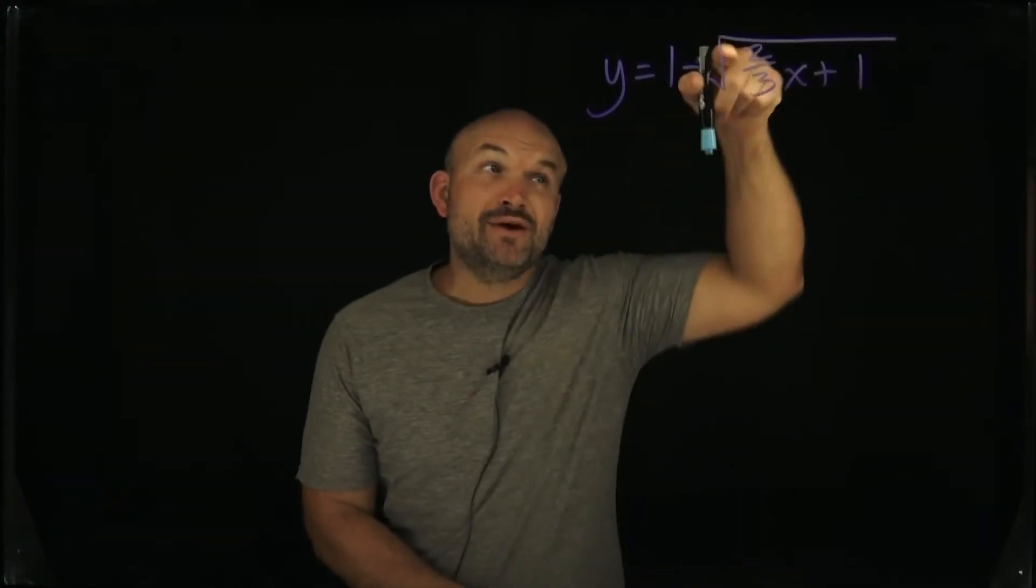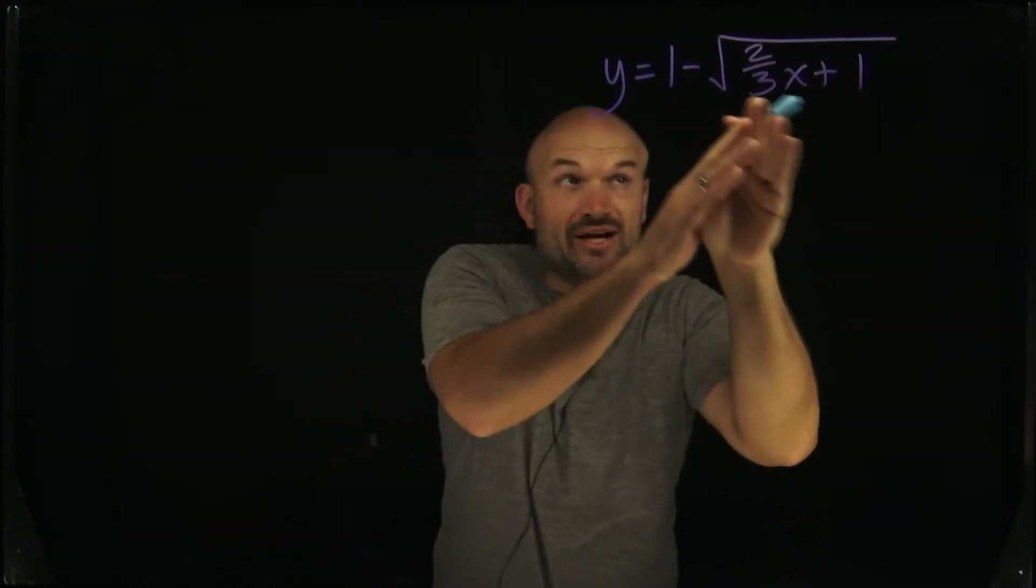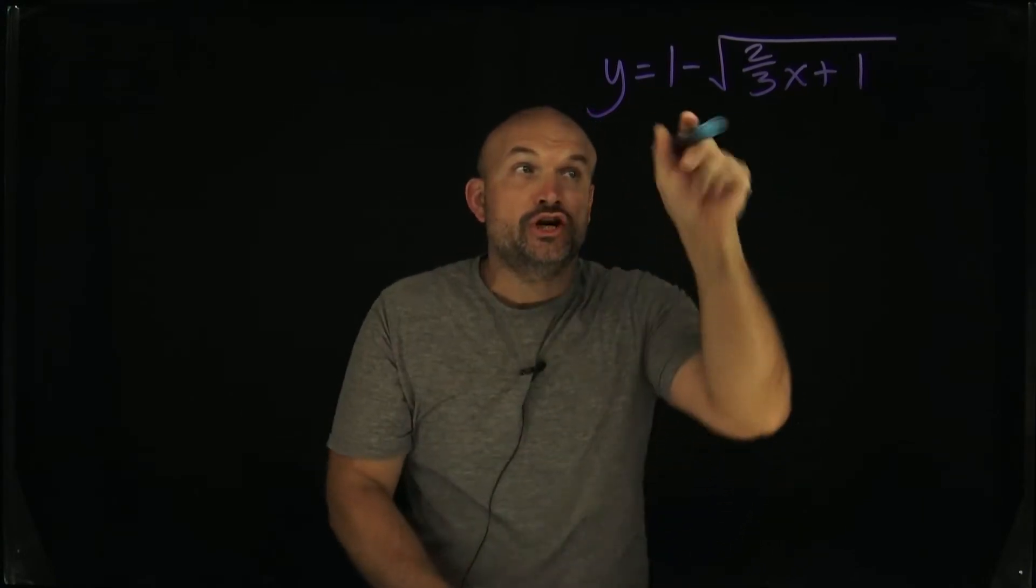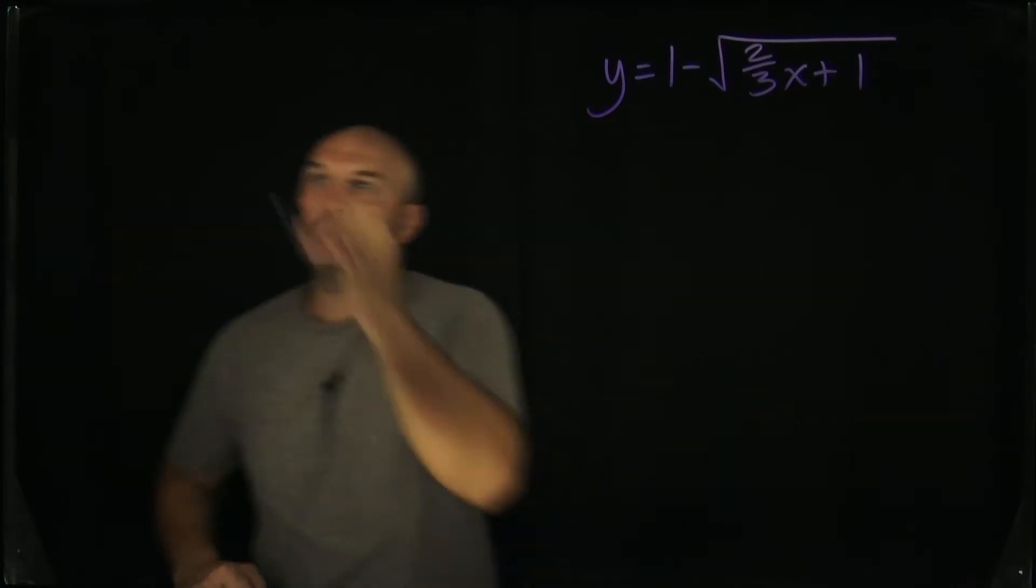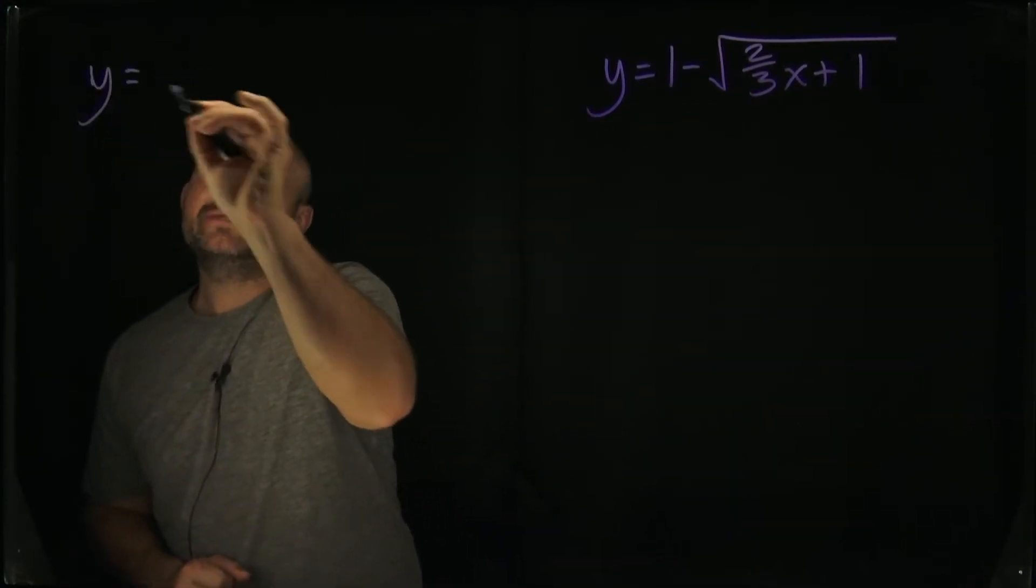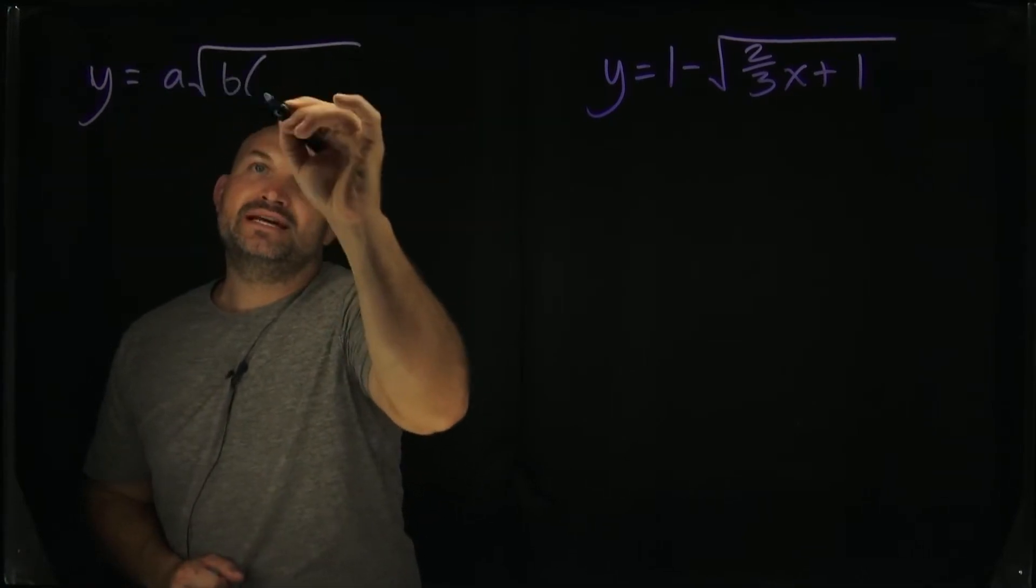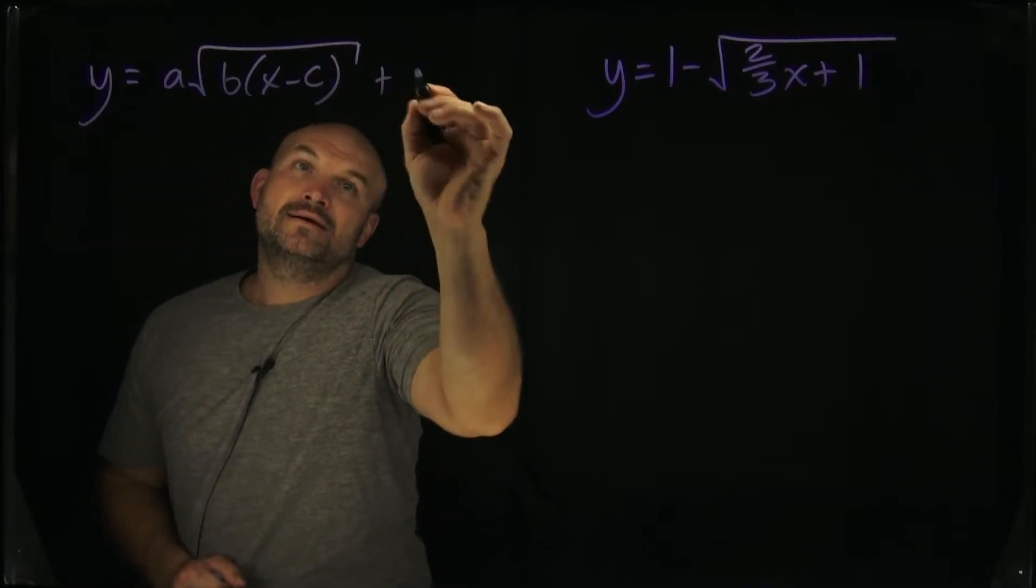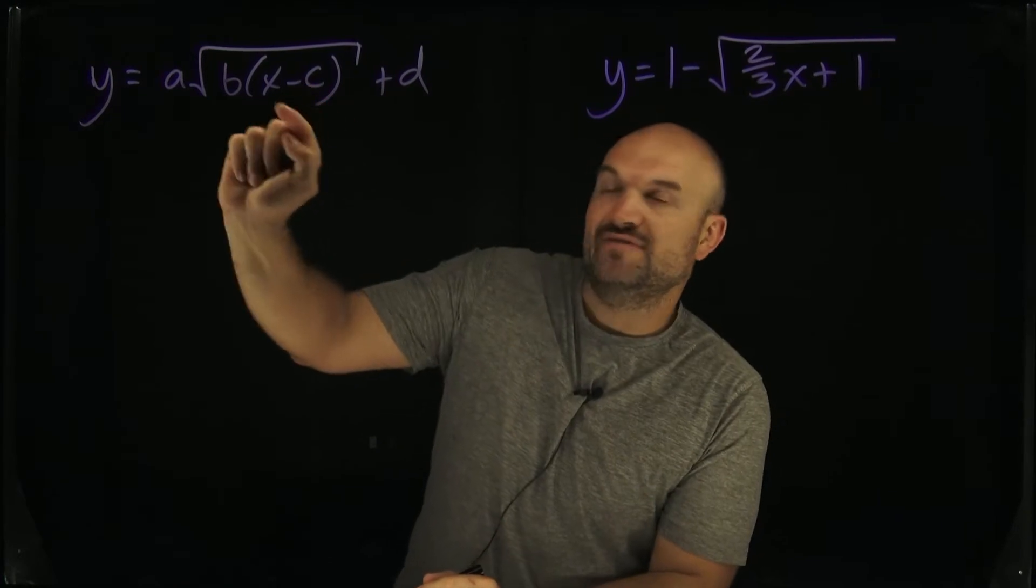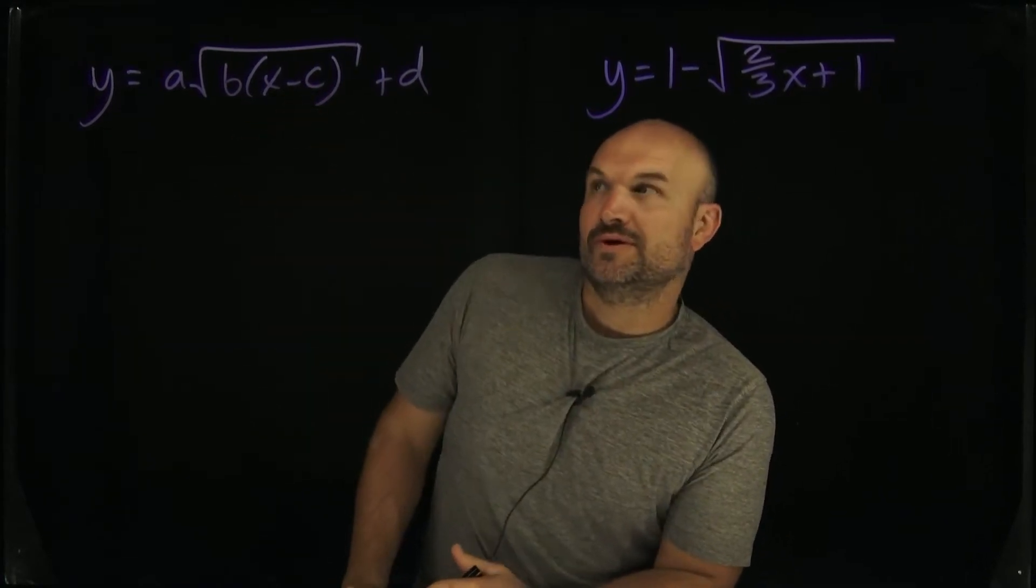All right, something I tell my students all the time, whenever you have any kind of number in front of your x inside of your function, you've got to factor that number out. What we're trying to do is get our function in this form: a times the square root of b times x minus c plus d. So we want our coefficient of x to be one. You can see right now our coefficient is two-thirds.